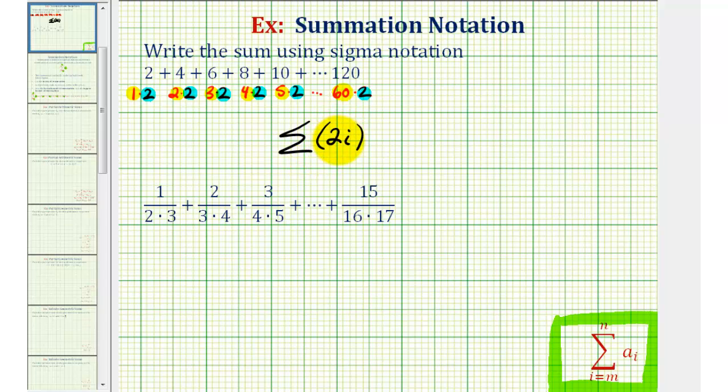Again, this two here is the second factor and this i is our index that increases by one each time. So i is going to start at one and stop at 60. This would be the sum of the series written using summation notation.